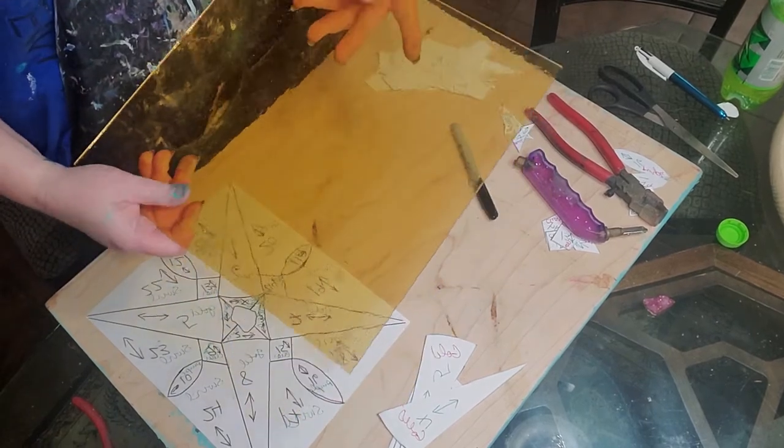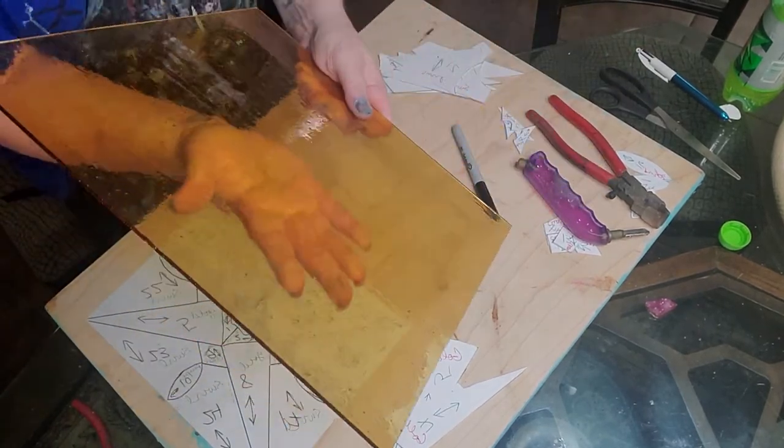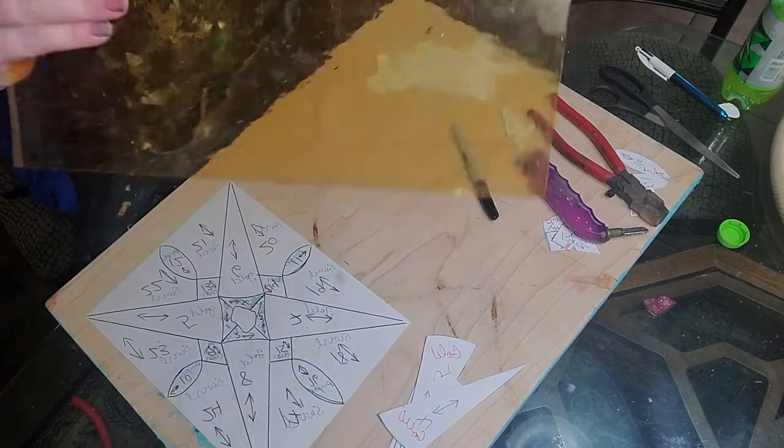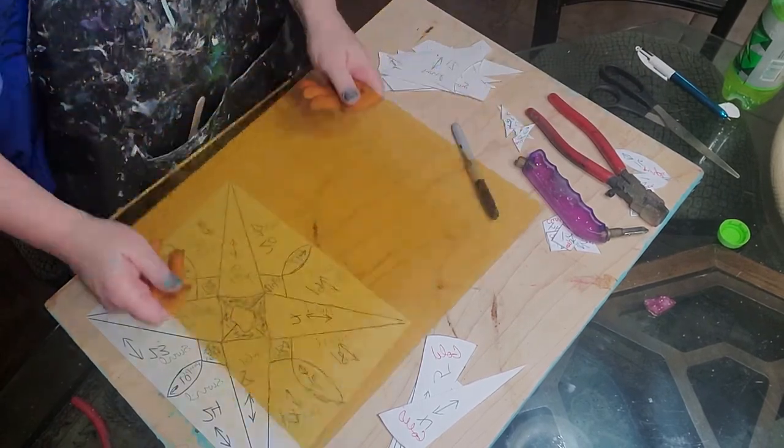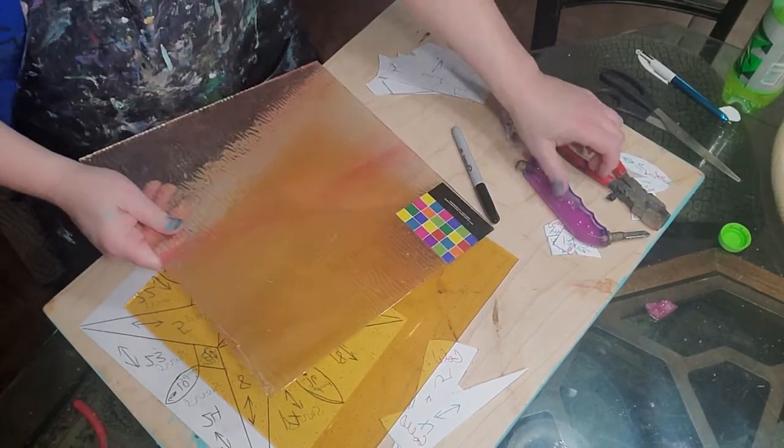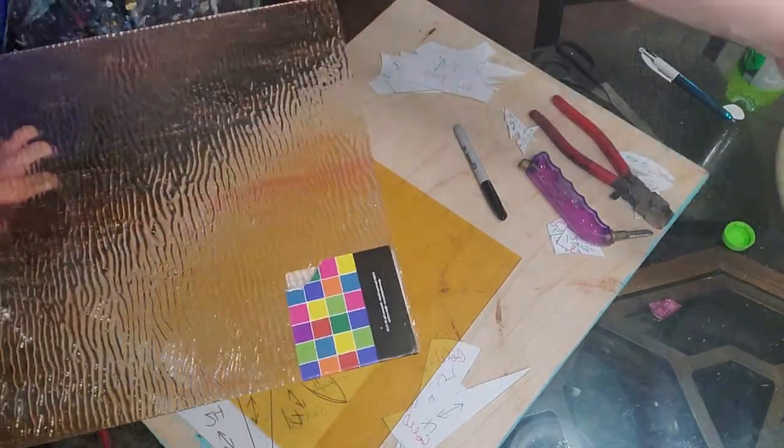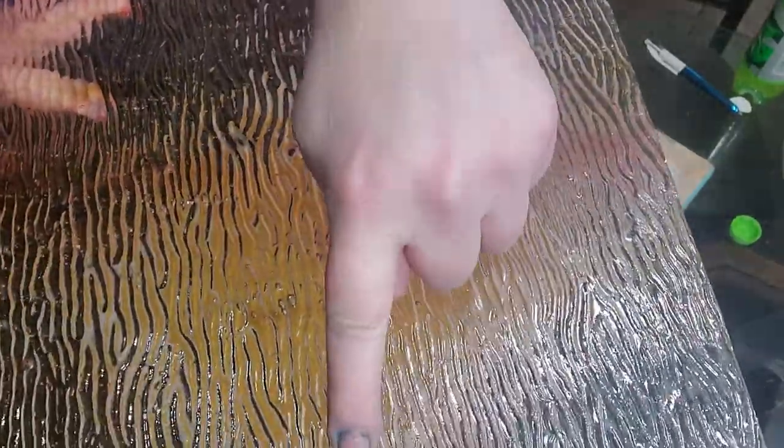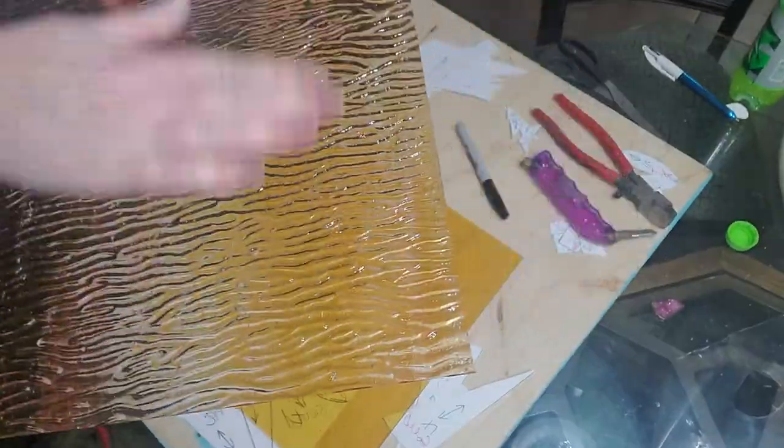I'm going to do a couple of these bigger pieces at first, so you can maybe have a better idea. Now, another thing we need to talk about is that the glass, a lot of it has different sides. One side is smoother than the other one most of the time. On this one, you can't probably tell. But there's little, it's rougher on this side than on this side. You want to always cut on the smooth side. Even if the other side is the side you want facing up.